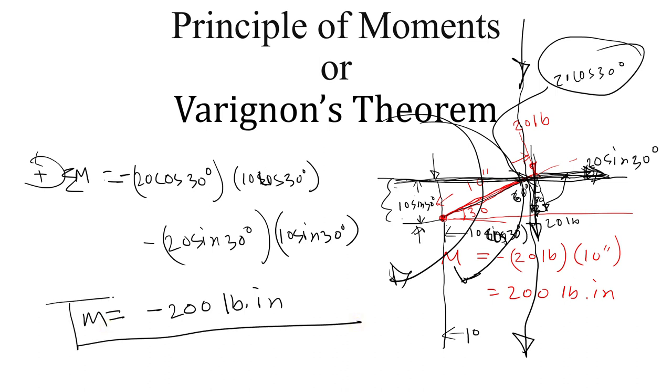Which is the exact same as what we have calculated previously for that single resultant force, 200 pound inches. So this is what Varignon's theorem is.